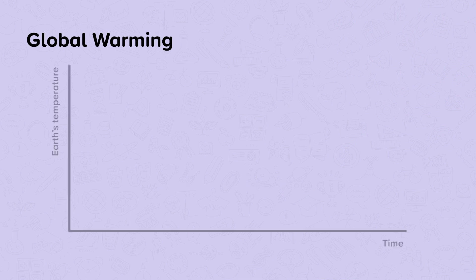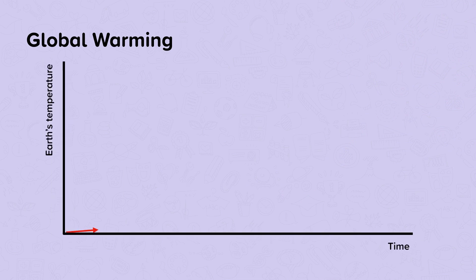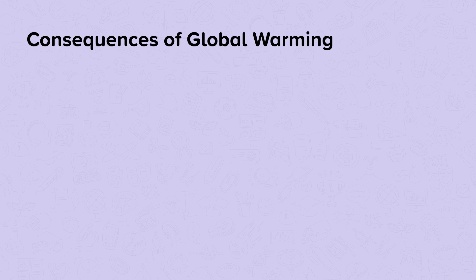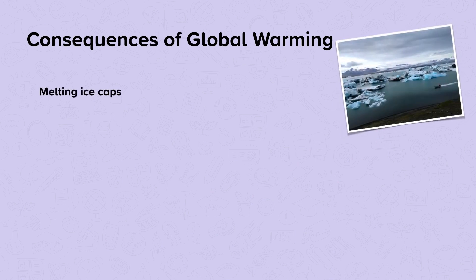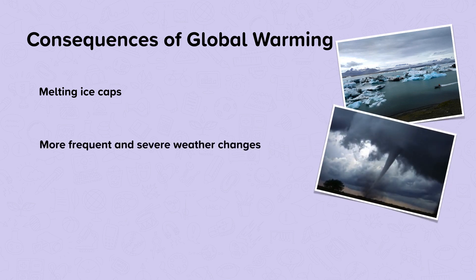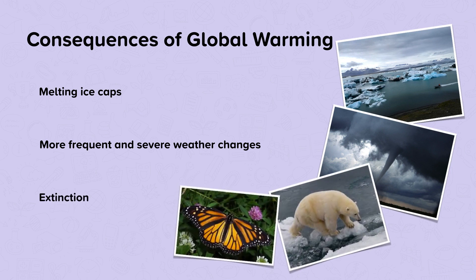The greenhouse effect contributes to global warming. Global warming is the gradual increase in the temperature of the earth's atmosphere over time. The consequences of global warming are quite severe. For example, melting ice caps due to increased temperatures, which can cause sea levels to rise and increases the risk of flooding. More frequent and severe weather changes, also as a result of changing temperatures. And extinction due to loss of habitats and extreme weather conditions.